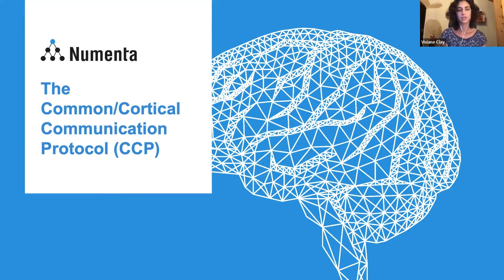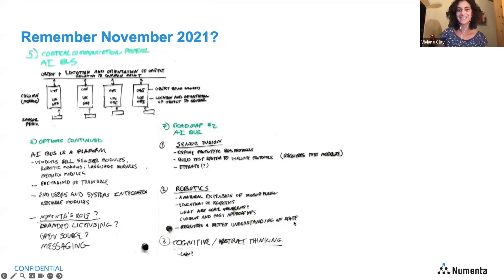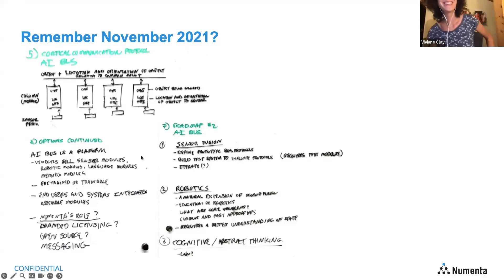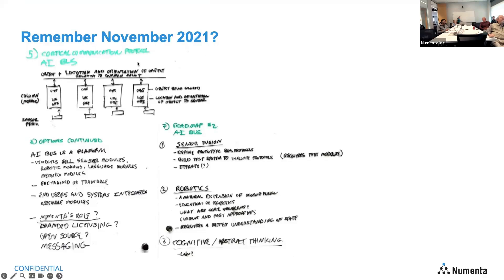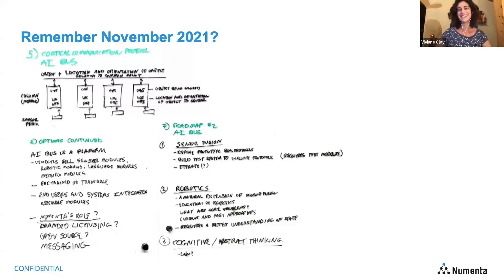This presentation is about the Common Cortical Communication Protocol. It doesn't sound like much, but it's kind of the glue within the Monty system. So what actually is it? Going back to November 2021, we had a meeting where Jeff wrote on the whiteboard and we were talking about the cortical communication protocol, also called the AI bus.